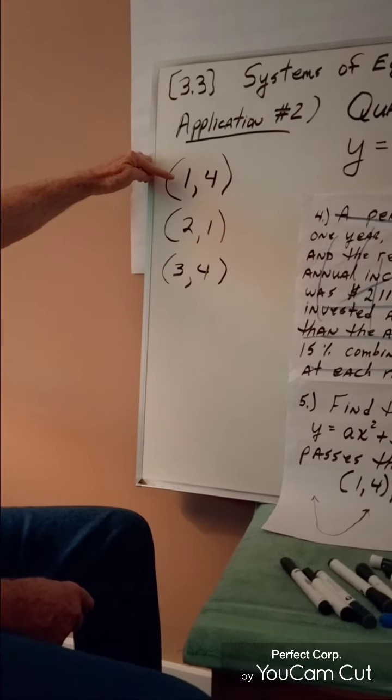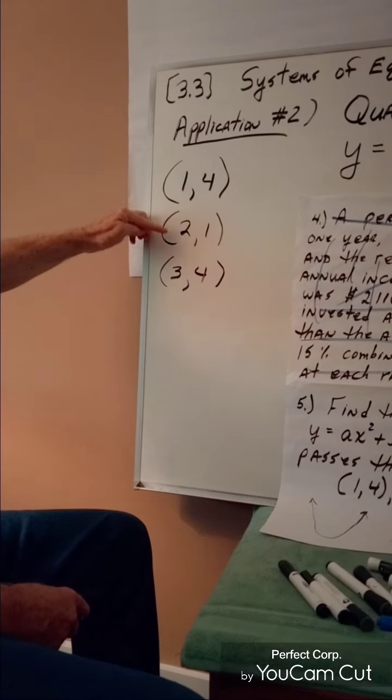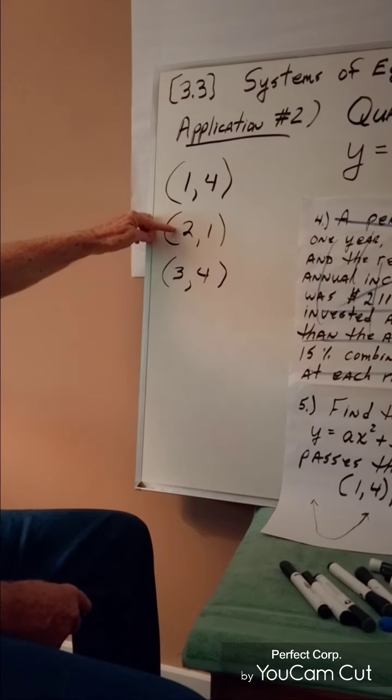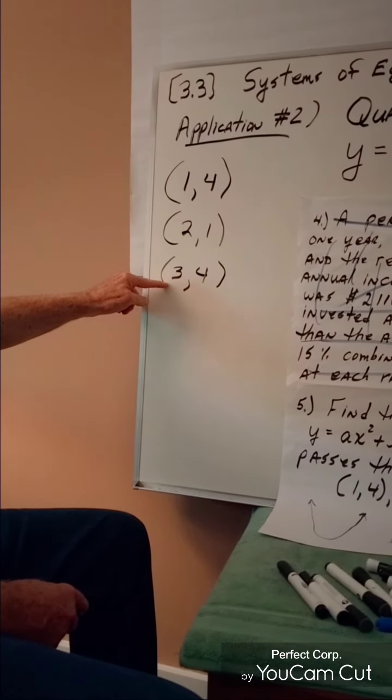One point is (1, 4). A second point is (2, 1). A third point is (3, 4). Now let's make sure we understand exactly what this application problem is asking us to do.